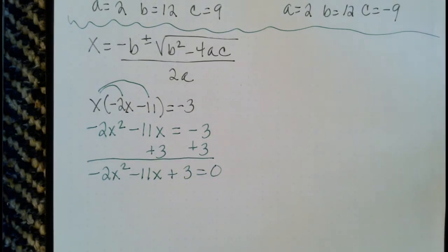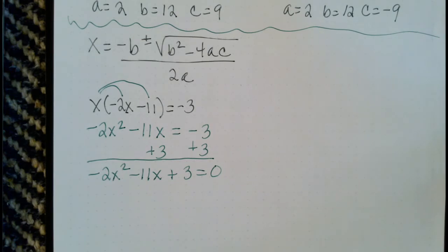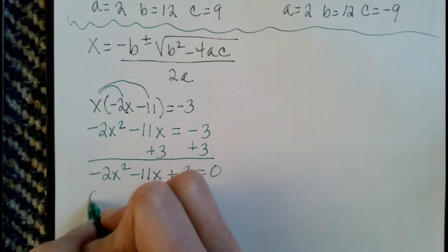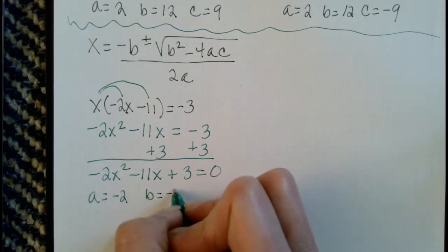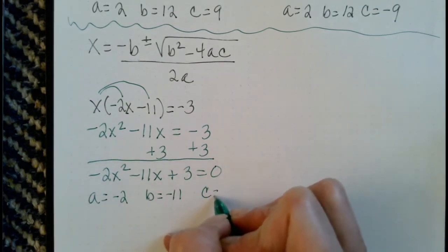And once we have it in this format, then what we can do is we can identify that a is negative 2, b is negative 11, and c is 3.